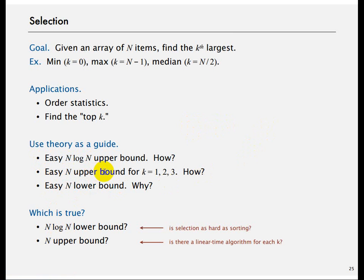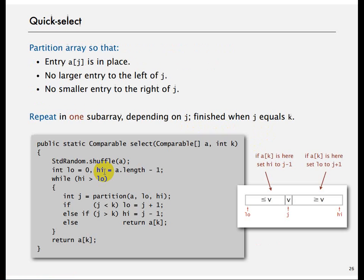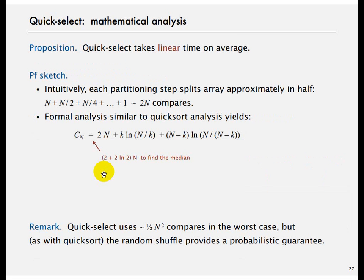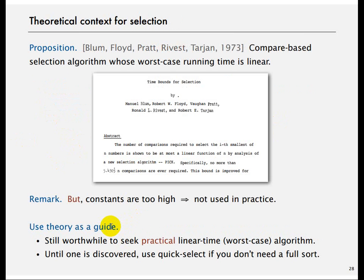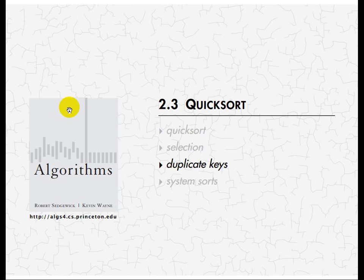The lower upper bound for selection is N log N and the lower bound is N. It turns out that this partitioning-based technique runs in order N on average. The intuition is that you are approximately halving the array each time and throwing away one portion, so the total work is roughly N plus N/2 plus N/4 and so on. The detailed analysis is beyond the scope of this lecture.